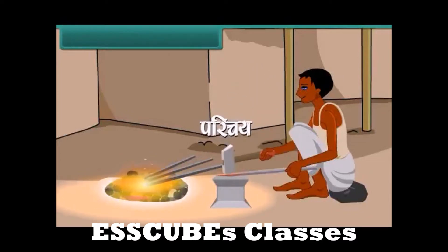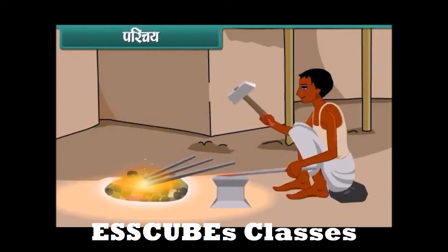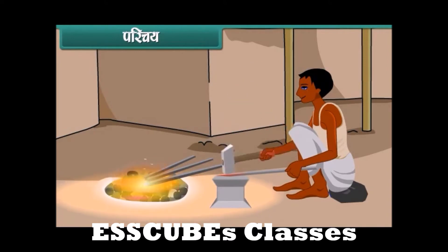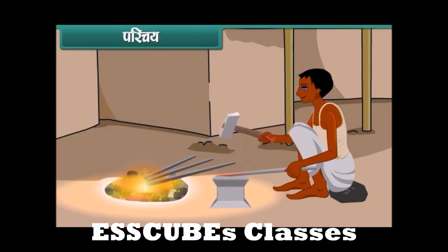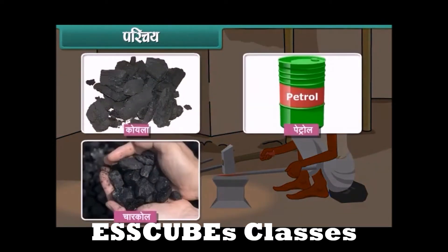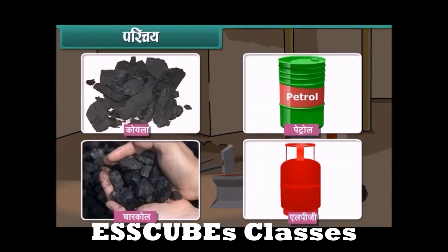परिचय: लोहार लोहे को गर्म करने के लिए कोयला जलाता है, जिससे वांछित आकार देने के लिए हथोड़े से पीटा जा सके। दैनिक जीवन में अनेक प्रकार के इंधन जलाये जाते हैं, जैसे कोयला, पेट्रोल, चारकोल, LPG इत्यादि। क्या आप जानते हैं कि जब इन इंधनों को जलाया जाता है, तो कौन सी रासायनिक अभिक्रिया होती है?